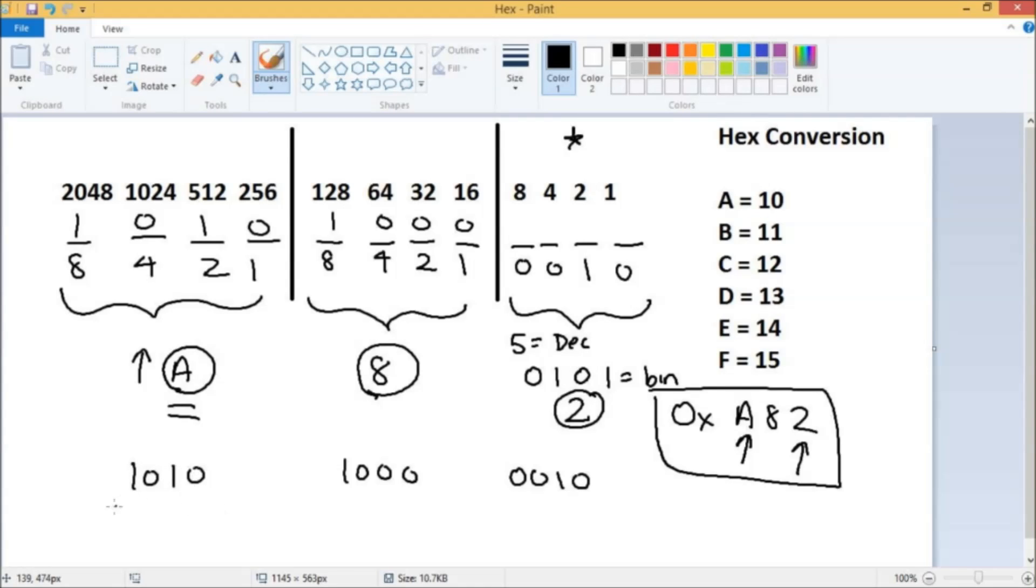So 8 and 1 gives us 10, so our entire string of binary looks like this. Now one of the things we can do of course is utilize that for an answer if they wanted us to convert this hex number to binary. This would be our binary number. But what if they wanted us to convert it to decimal? Well then we would just add up all of these placeholders up at the top.